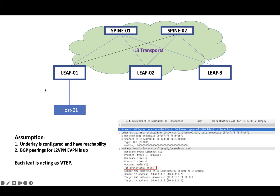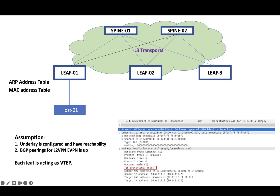When the leaf switch receives the GARP, it will learn the MAC address and store it in the MAC address table. It will also learn the IP information and store it in the ARP table. This MAC and IP information will then be advertised as an EVPN route to the EVPN peers — in our case, to spine 1 and spine 2. These spine devices will then advertise the EVPN route to all other leaf devices.